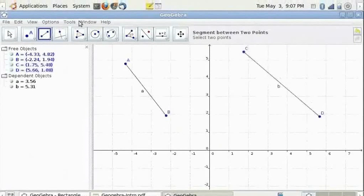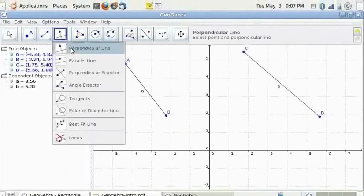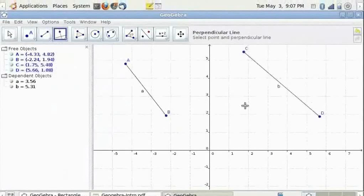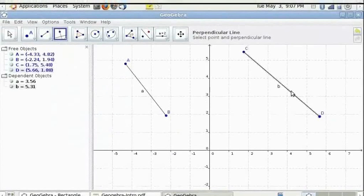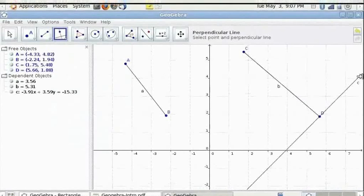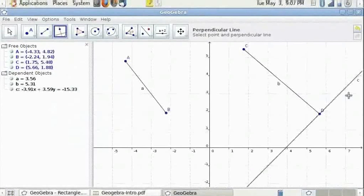Similarly you can draw a perpendicular line by checking a point and then the line. You will get a perpendicular line through point D, perpendicular to segment CD.